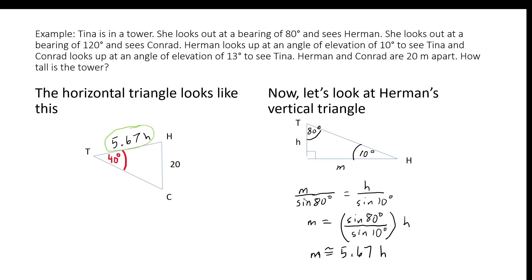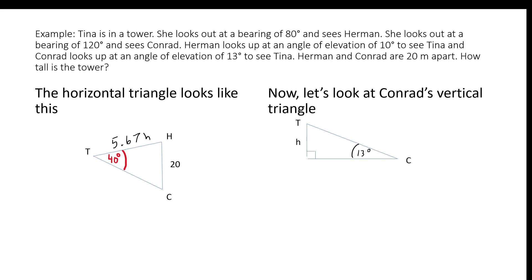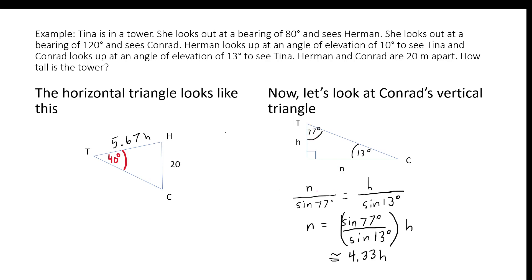Now we do the same with Conrad and Tina. Conrad is on the ground and Tina is elevated, so Conrad looks up at Tina at an angle of elevation of 13 degrees, giving a third angle of 77 degrees. We call the horizontal distance from Conrad to the base of the tower N. Using the sine law: N over sine 77 degrees equals H over sine 13 degrees. So N equals sine 77 over sine 13 times H, which is roughly 4.33H.